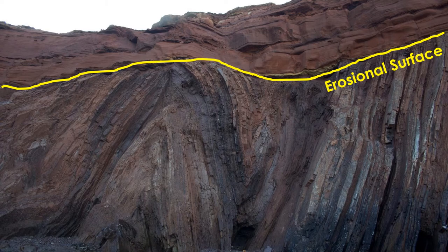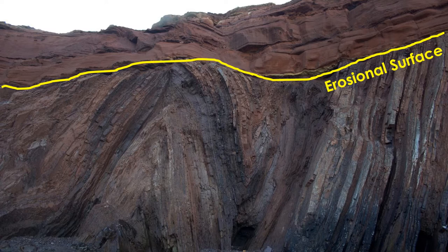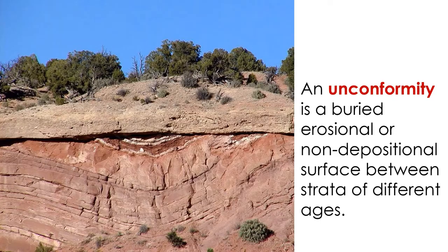This boundary is an erosional surface, and it is a spectacular example of an unconformity. An unconformity is a buried erosional or non-depositional surface between strata of different ages. But what does this mean? How do unconformities form, and are there different types? To begin to answer these questions, let's review erosional surfaces.